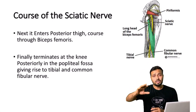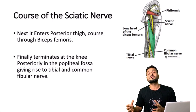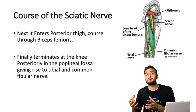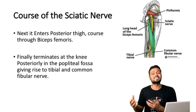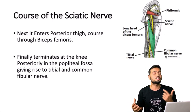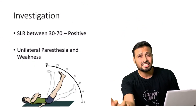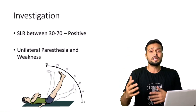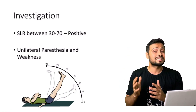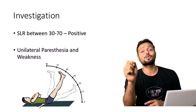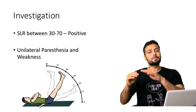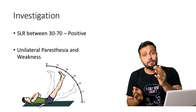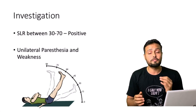The sciatic nerve supplies the whole lower limb, mainly the back of the thigh, which is why most symptoms for the patient will be present there — paresthesia and muscle weakness. To investigate this condition, we can use the SLR test. In the SLR test, if symptoms are aggravated in the range between 30 to 70 degrees, that confirms sciatic nerve compression.